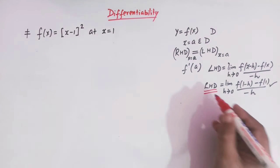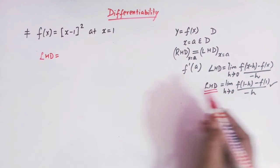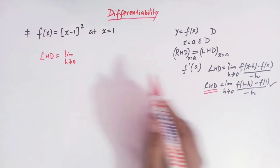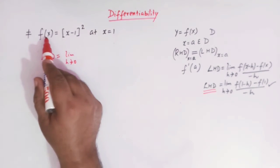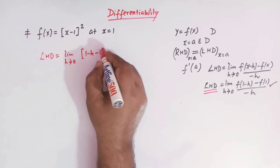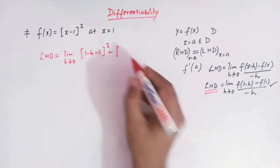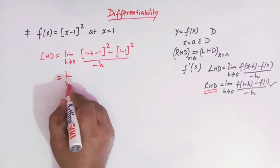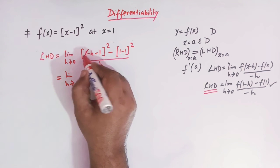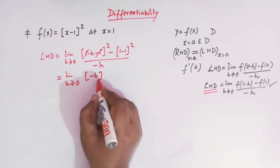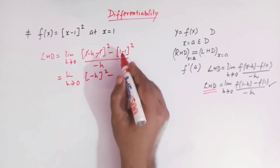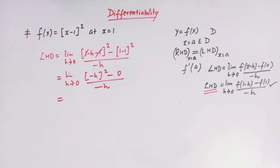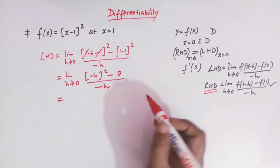Now the left hand derivative equals: limit h tends to 0 of [f(1-h) - f(1)] / (-h). We compute f(1-h) by taking x = 1-h in the function, giving [greatest integer of (1-h-1)]² = [greatest integer of (-h)]². And f(1) = [greatest integer of (1-1)]² = [greatest integer of 0]² = 0. So we have: limit h tends to 0 of [greatest integer of (-h)]² - 0, divided by (-h).